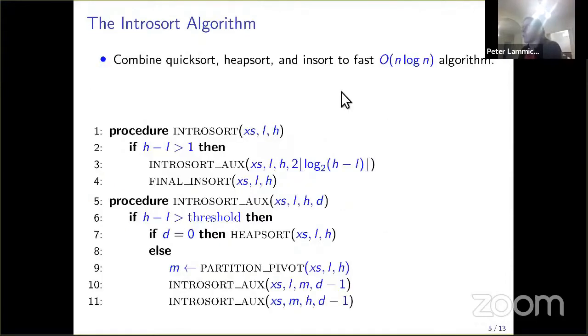So what's the introsort algorithm about? It's well known that quick sort is in practice the fastest sorting algorithm, except for corner cases where it gets quadratic. The idea of introsort is to combine quick sort and heap sort to get the best of both worlds and get a practically fast n log n algorithm. When the recursion depth gets too deep, we switch to heap sort.